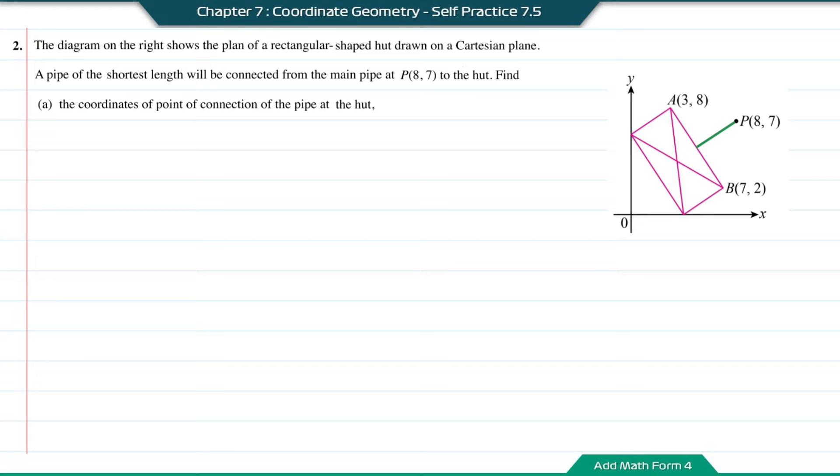The shortest distance has to be a straight line from point P which is perpendicular to the straight line AB. From the diagram, it looks like the connection point Q is the midpoint of AB, but to confirm, I'm going to find the length of AP. Using the distance formula, the length of AP is √[(8-3)² + (7-8)²] = √[25 + 1] = √26.